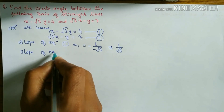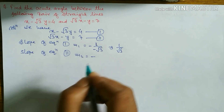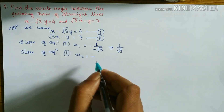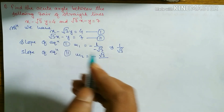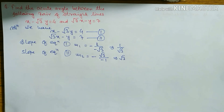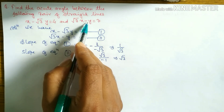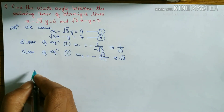For slope of equation 2, m2 equals minus coefficient of x divided by coefficient of y. The coefficient of x is root 3 and the coefficient of y is minus 1. So m2 equals minus root 3 divided by minus 1, which gives m2 equals root 3.